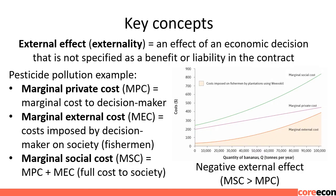Key Concepts: External Effects. An externality is an effect of an economic decision that is not specified as a benefit or liability in the contract. It can be a cost or benefit that falls on people external to the trade. Here we look at the effect of a negative externality when the cost of an action is not accounted for in the private costs of the producer when deciding upon the quantity to produce.